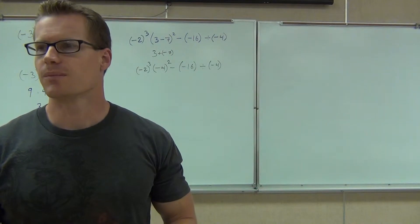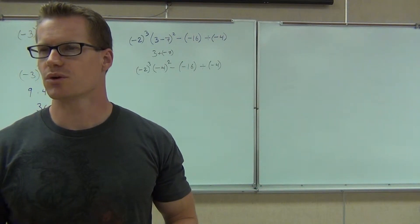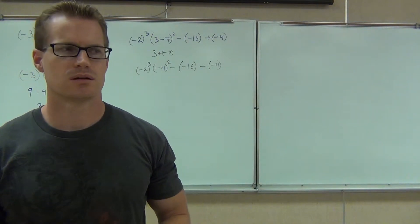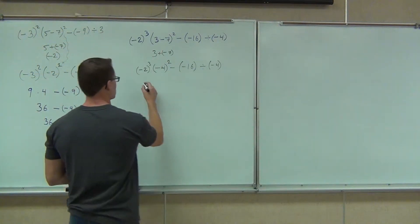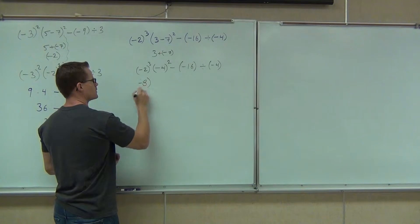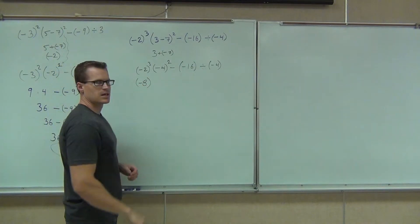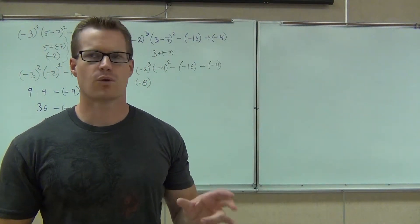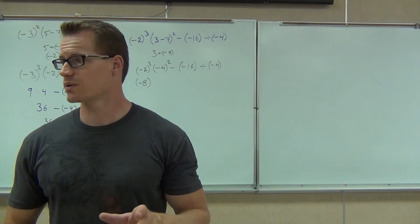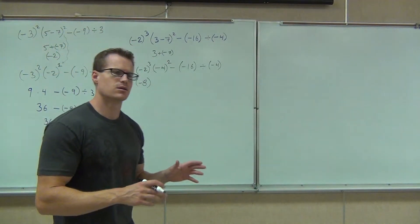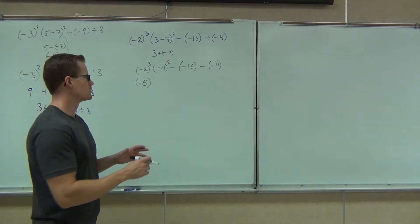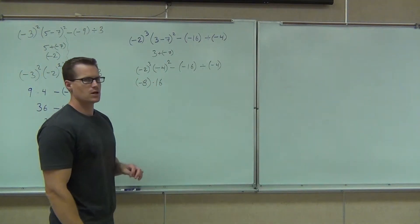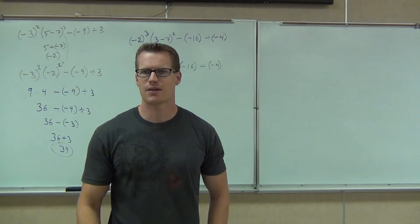On the first one, does the negative go with that 2 or not? So are we going to get positive 8 or negative 8? I'm going to keep it in parentheses to show that that's a negative. The next one — does the negative go with the 4? It's also in parentheses. We're going to get 4. So negative 4 squared gives us 16.